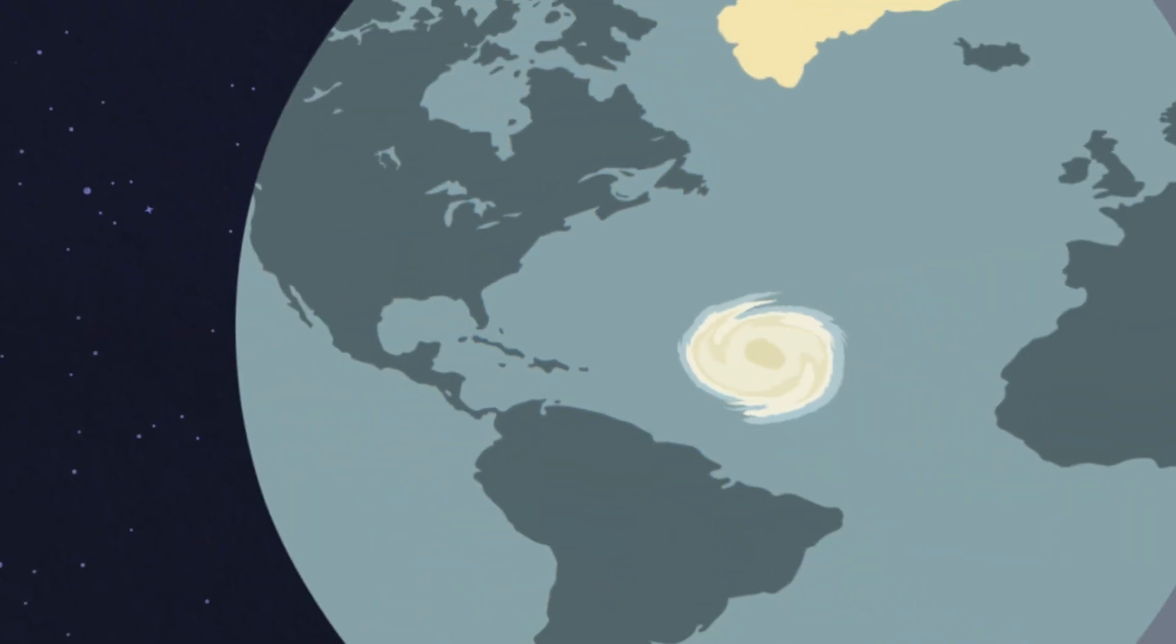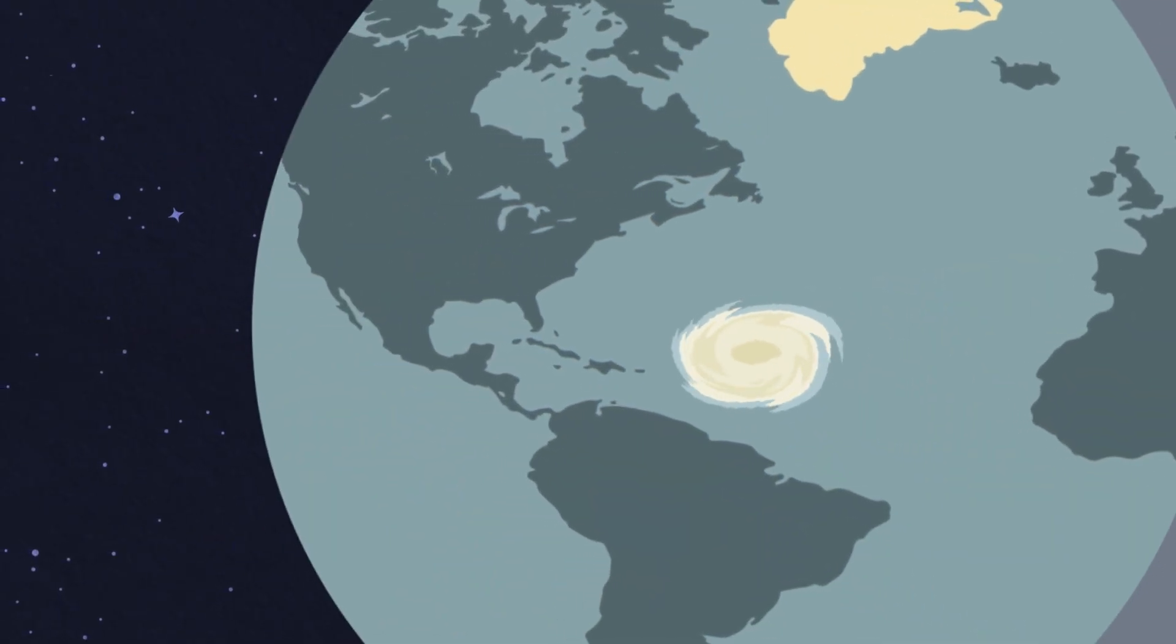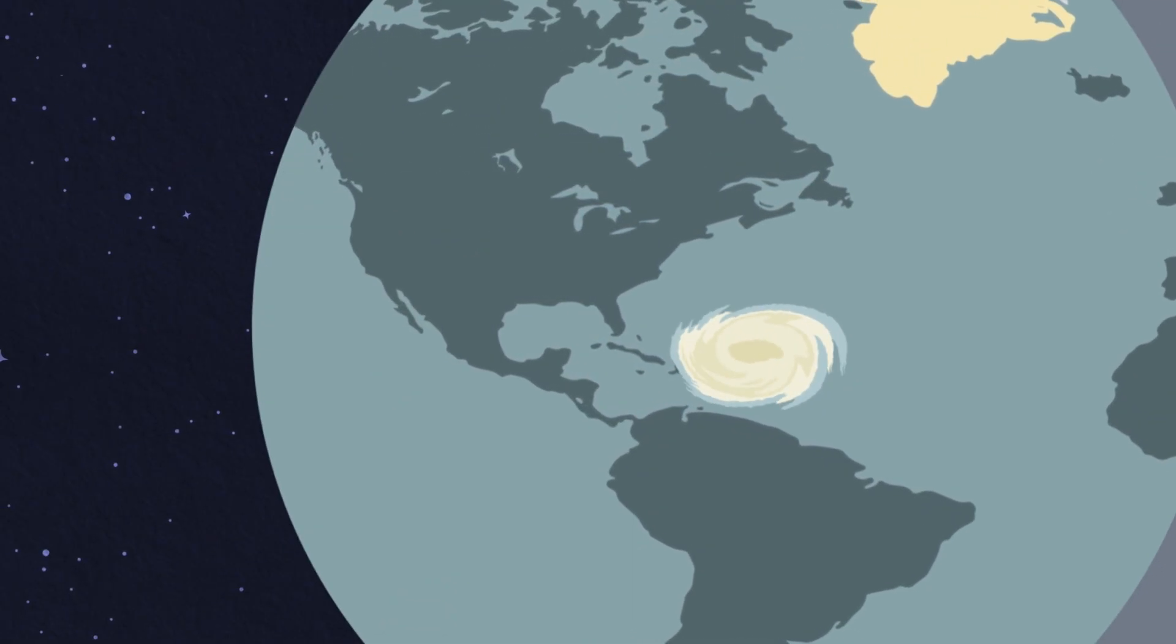A hurricane on Earth typically lasts a week, but this hexagon storm has been here for decades and possibly centuries.